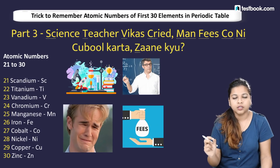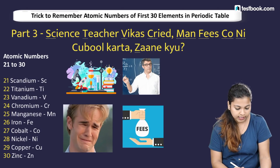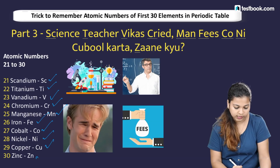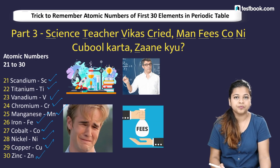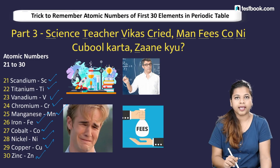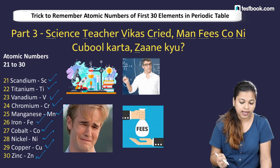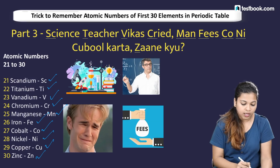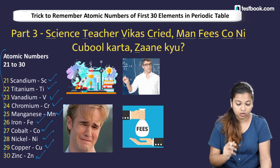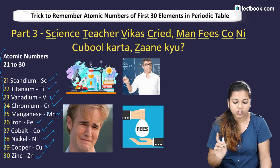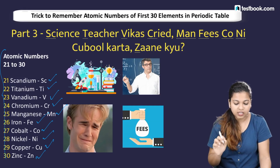Atomic numbers 21 to 30 are the d-block elements: scandium, titanium, vanadium, chromium, manganese, iron, cobalt, nickel, copper, and zinc. The mnemonic sentence for these is: 'Science teacher Vikas cried, man fees cannot accept, why.'